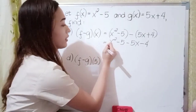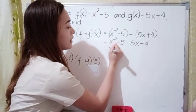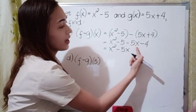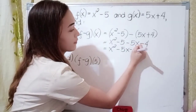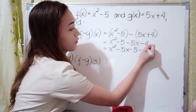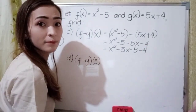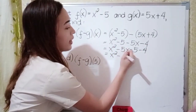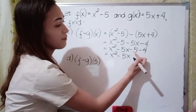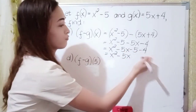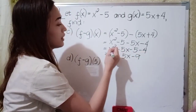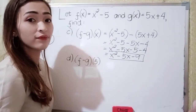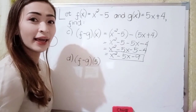Now combine the similar terms. So that is x squared minus 5x, and then negative 5 minus 4. Proceed to the operation: x squared minus 5x, and negative 5 minus 4 is negative 9. So the answer in letter c is x squared minus 5x minus 9.